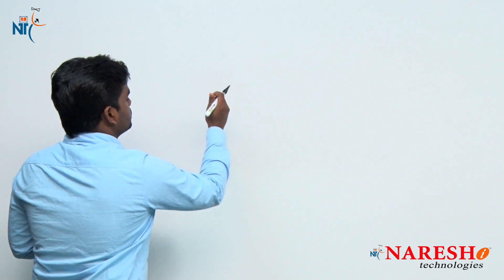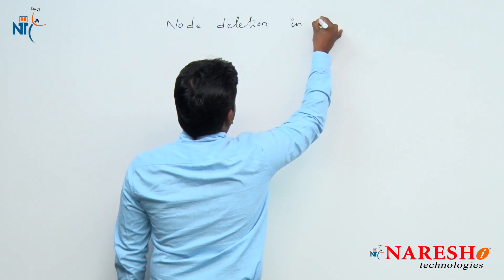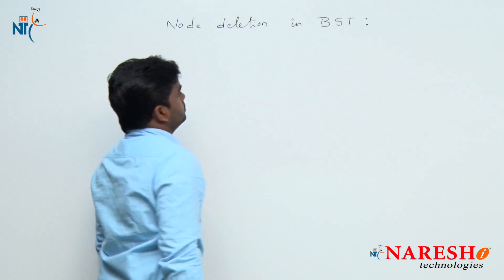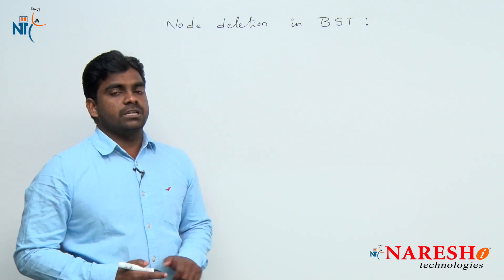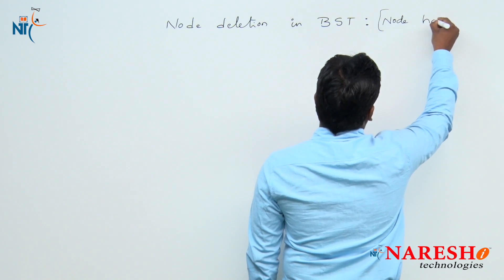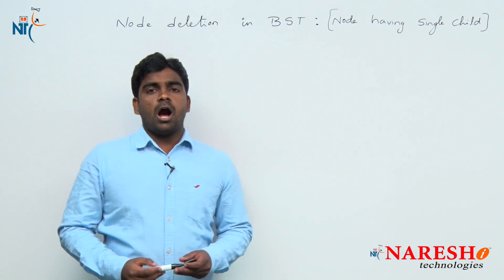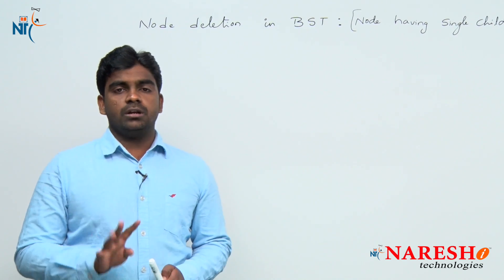Actually if the node is having one child, generally we cannot call it as a leaf node of course, but anyway - a node having single child. So node deletion in a binary search tree: node having single child. How many options are there? Total 4 chances we have.